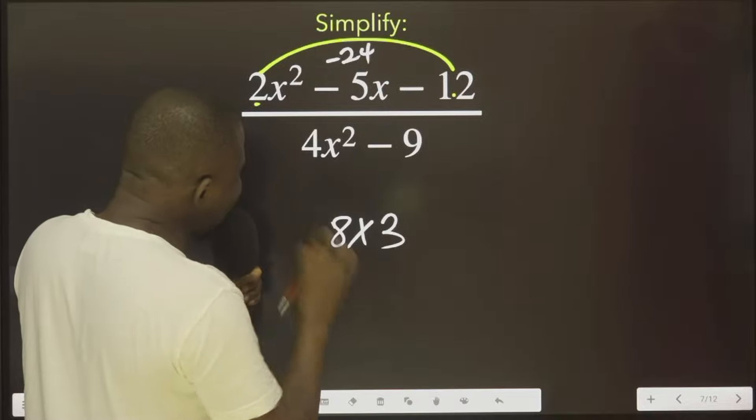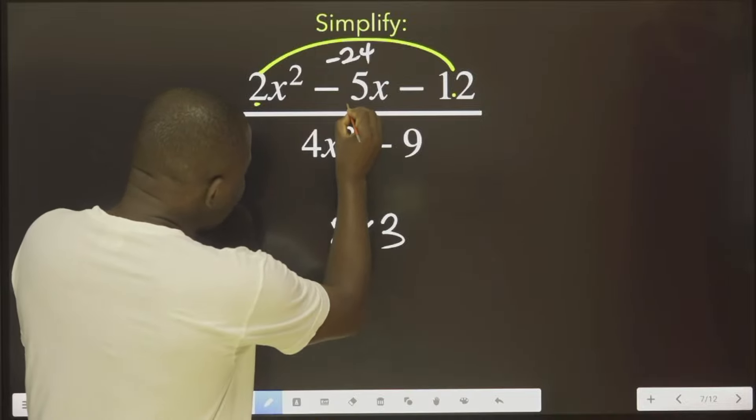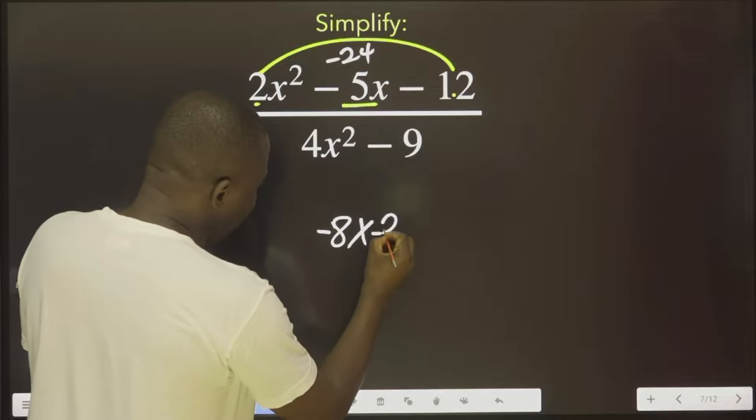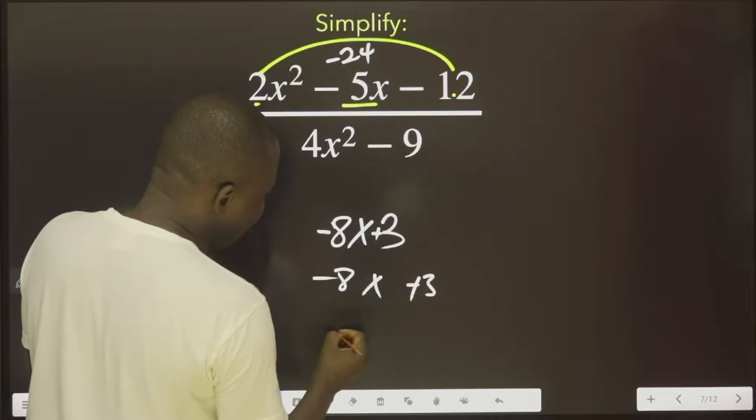But we need to consider the signs. Therefore, because this one is minus 5, I'm going to put minus here. Then I put plus here. It means minus 8 times plus 3 and minus 8 plus 3.